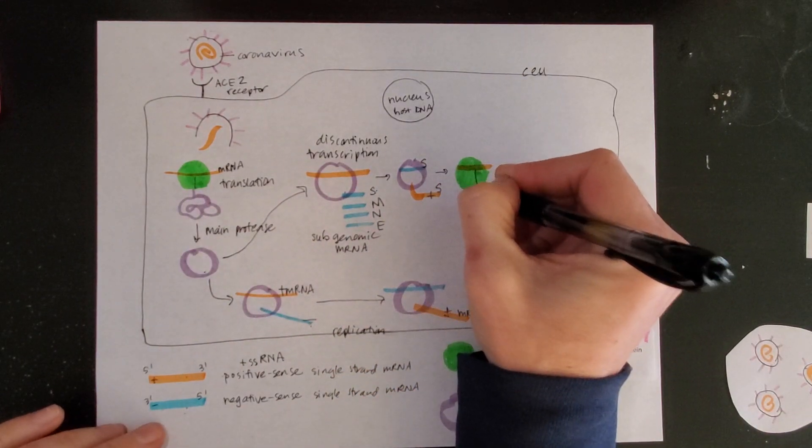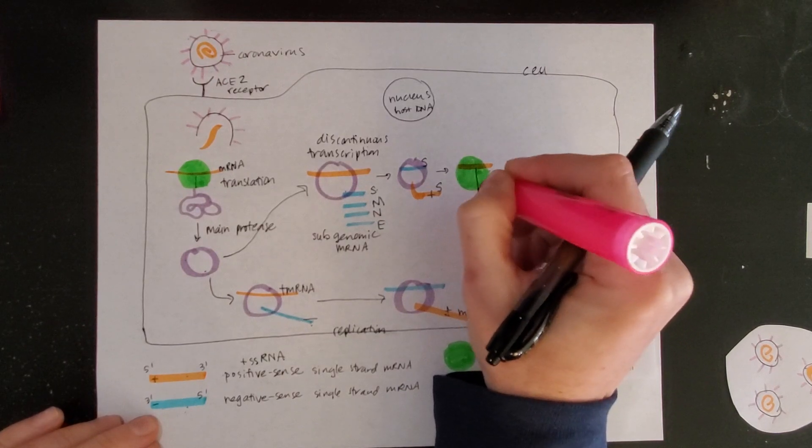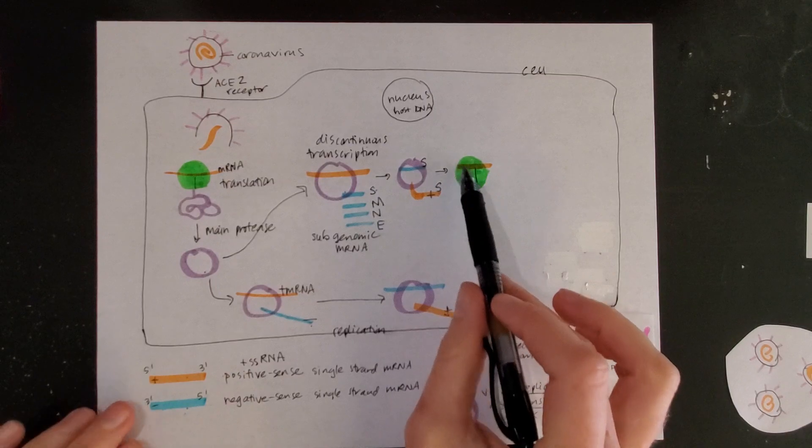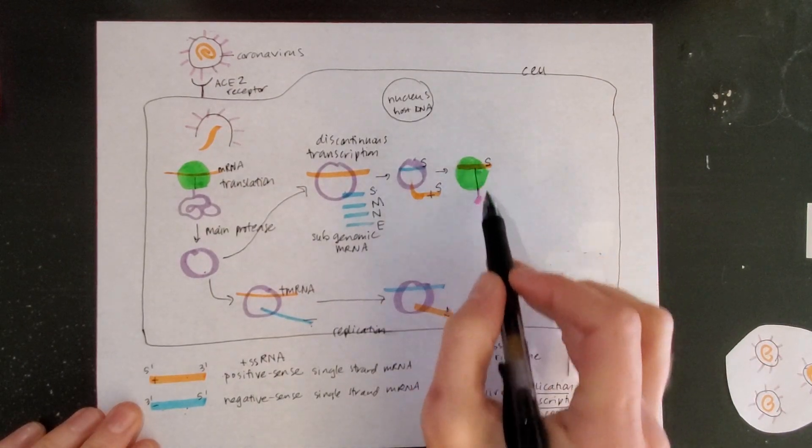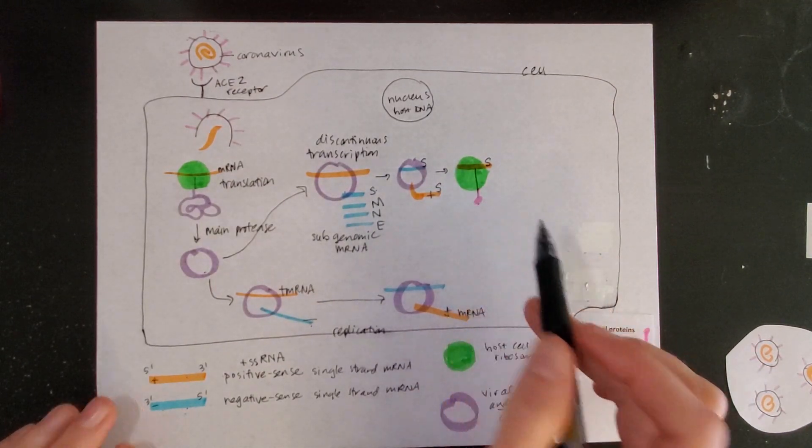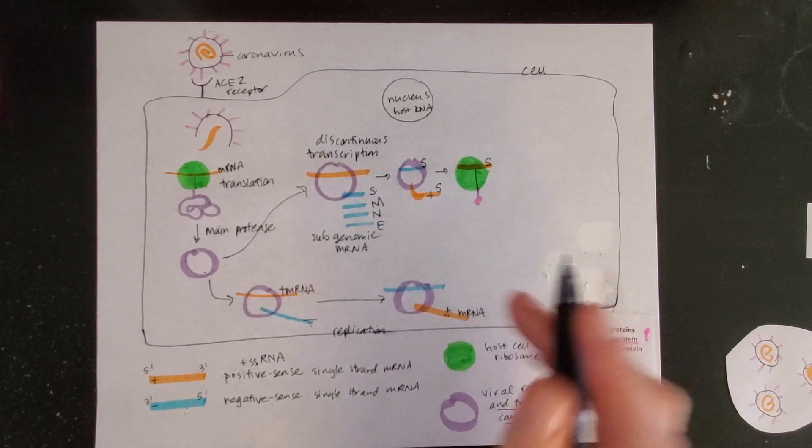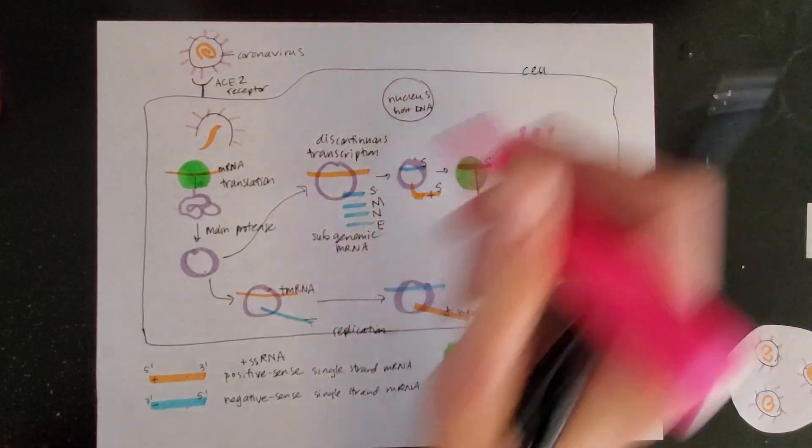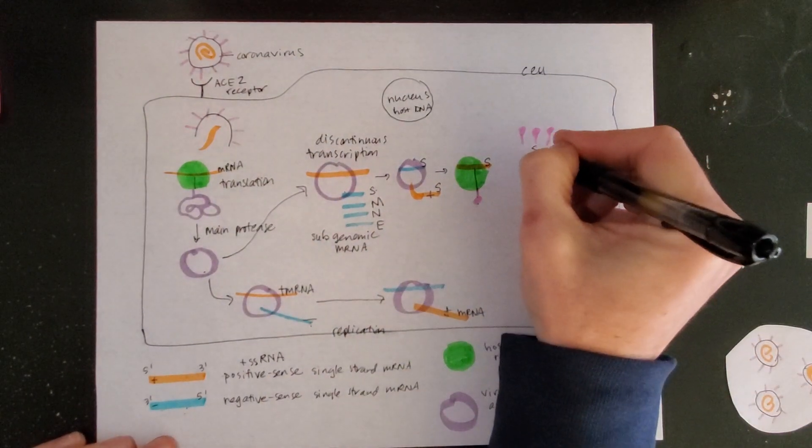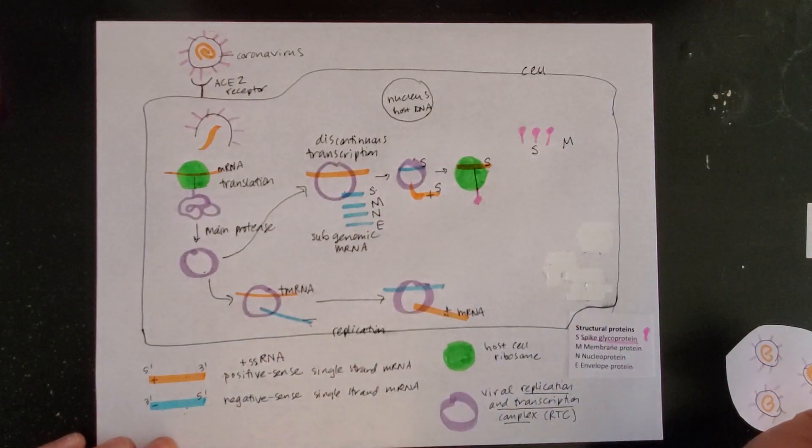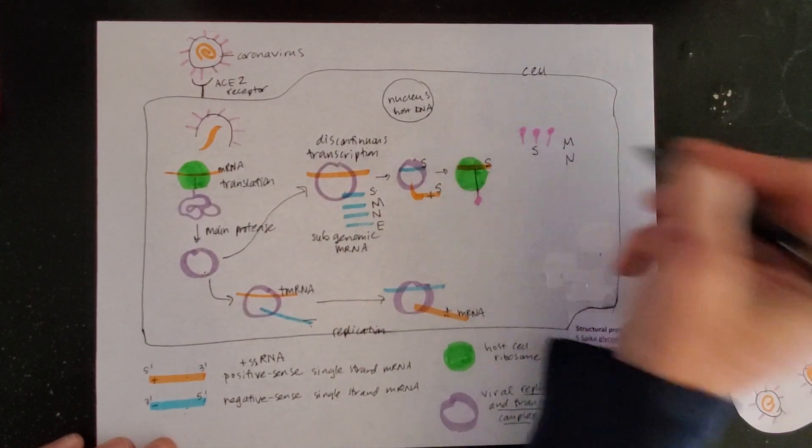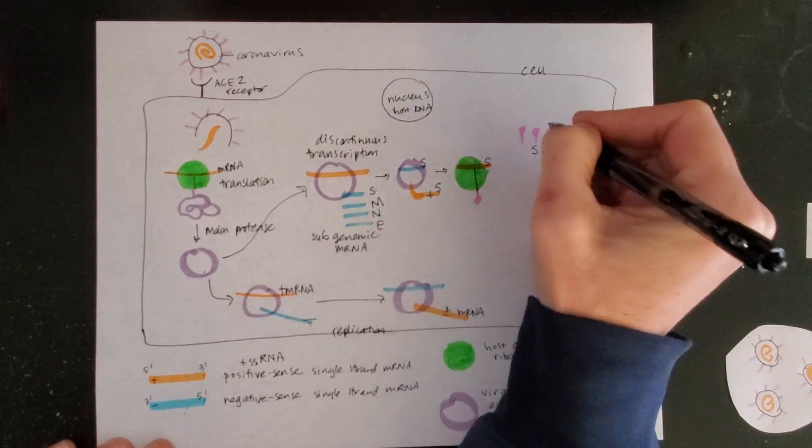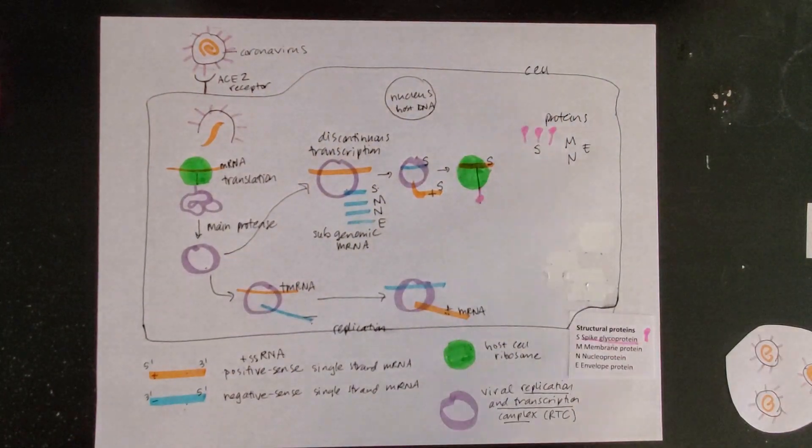I'm going to start to produce little spike proteins. This is my spike mRNA code coding for these spike proteins. As a result, I start to be able to build up a bunch of spike proteins. I would also end up with those membrane proteins, the nucleoproteins, and the envelope proteins. I'm able to produce all of the proteins that I need.